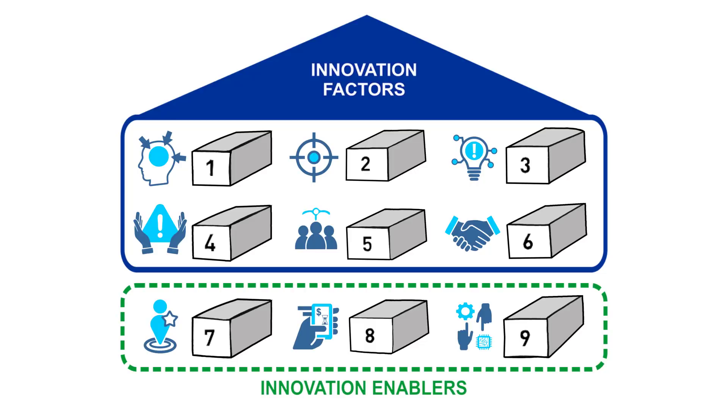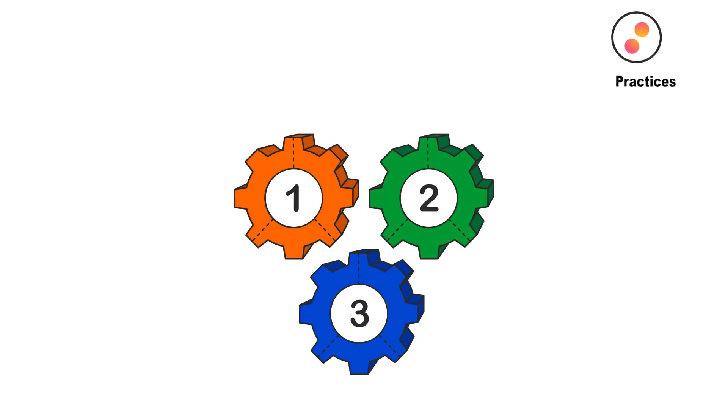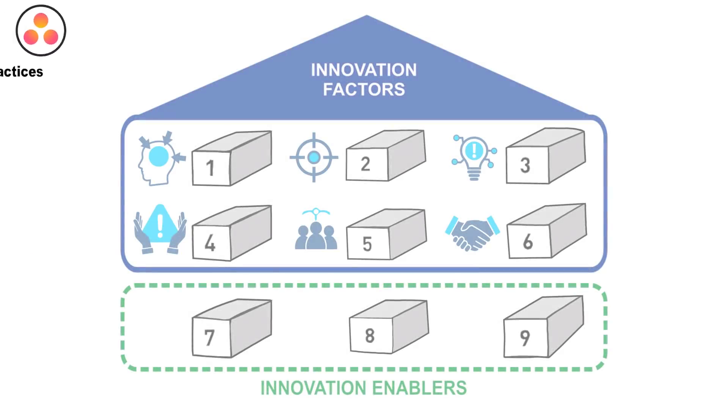To integrate the ICAT with OPM for TAM, we mapped the practices that support technology adoption from OPM for TAM to each of the six innovation factors. Each practice is actioned and supported by the three innovation enablers: leadership, resources and processes.